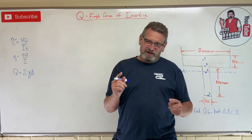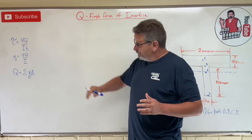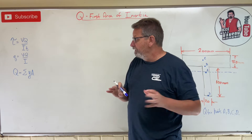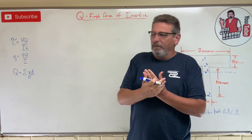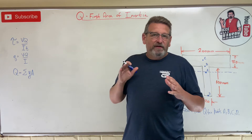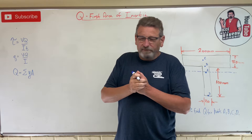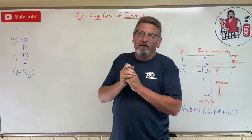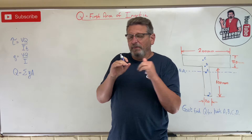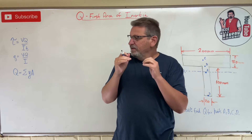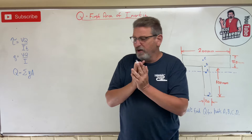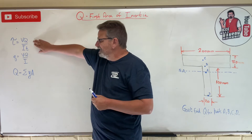Hey team, welcome back. We're talking about the first area moment of inertia, capital Q. We started the chapter on transverse shear and we're going to see this new thing pop up — capital Q. What the heck is Q? Q is called the first area moment of inertia, and it is a description of an area above or below a point of interest. Q is really confusing for students, so I'm going to try to clear it up.